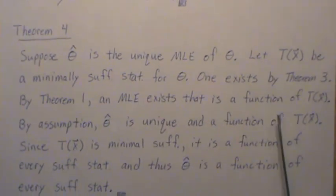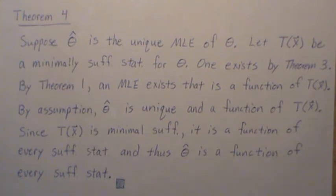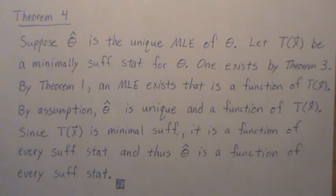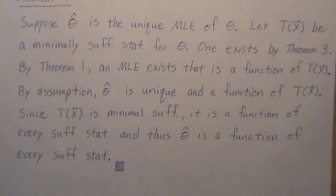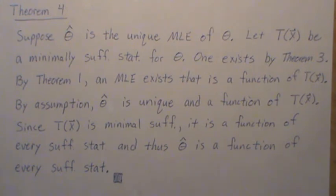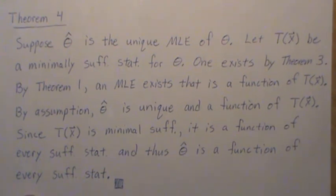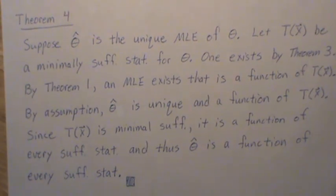Theorem 4, the main theorem: suppose theta-hat is the unique MLE of theta, and let T of X be a minimally sufficient statistic for theta — one exists by Theorem 3. By Theorem 1, an MLE exists that is a function of T of X. By assumption, theta-hat is unique and a function of T of X. Since T of X is minimally sufficient, it is a function of every sufficient statistic, and thus our MLE theta-hat is a function of every sufficient statistic. Therefore, if the MLE is unique, it is a minimally sufficient statistic — another way to find minimally sufficient statistics. Technically, Theorems 2 and 3 were added for additional knowledge.